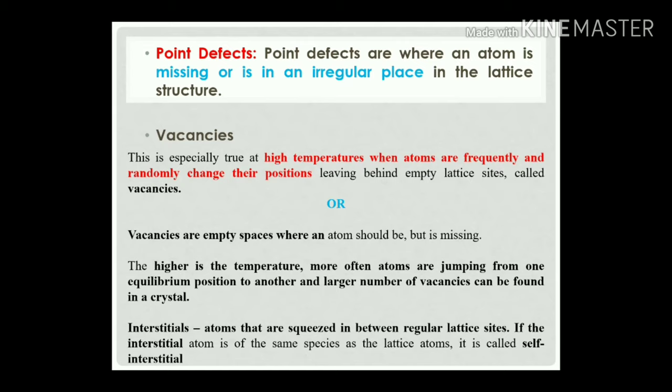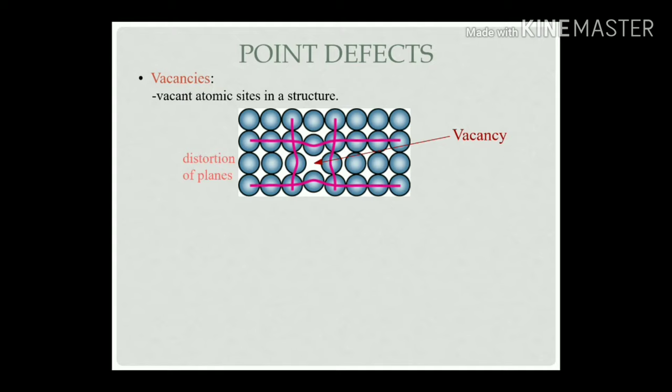Interstitials are atoms squeezed in between regular lattice sites. If the interstitial atom is of the same species as the lattice atom, it is called a self-interstitial. From the figure you can see that one atom is missing from its own position in the structure — by leaving that position it generates a vacancy. Such defects present in materials are called vacancy kind of point defects.